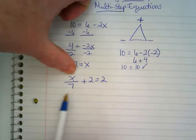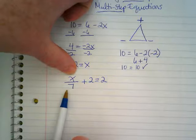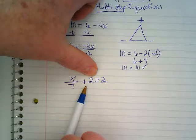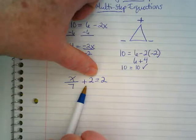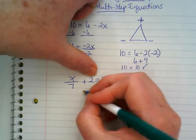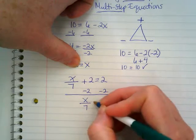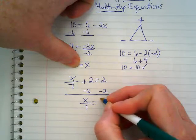Right now, the 7 as a denominator is attached to the variable, so we're going to ignore it in our first step, and we're going to go to this 2. What's the inverse of positive 2? Negative 2. And then I have x over 7 is equal to what? 0.